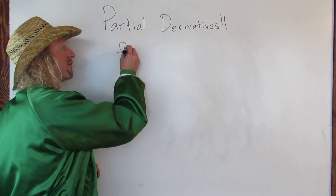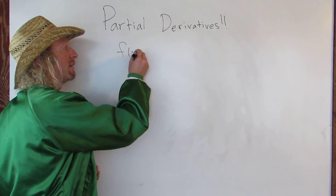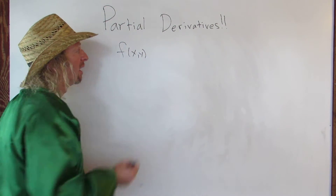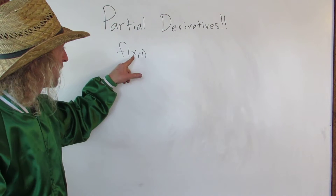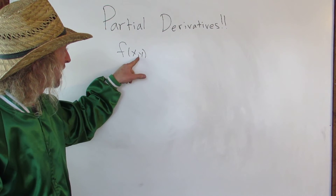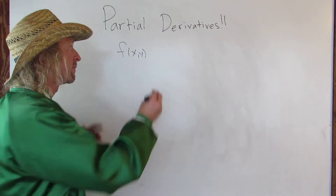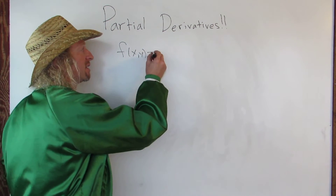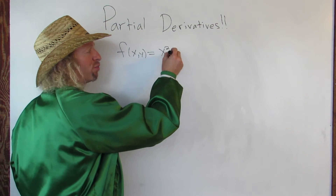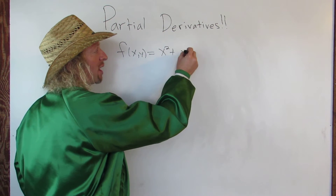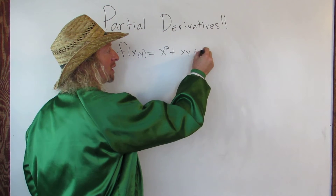Say we have a function f of x, y. It's a function of two variables. You write it like this — you have an x, y. And say it's x squared plus x times y plus y squared.